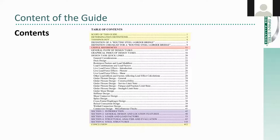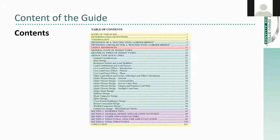That leaves the green sections — about 30 pages, and this is the heart of the guide. For each project, you might look at the definition of a routine steel I-girder bridge once, just to make sure your bridge qualifies. Then you would launch into either the general flow of design tasks or the graphical index of design tasks, which is your outline of how to design a routine steel I-girder bridge. From there, you would choose the design task quick links page that applies to whatever given task you're working on.